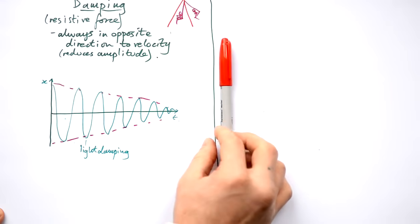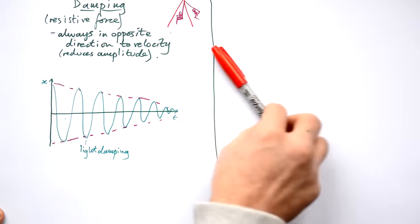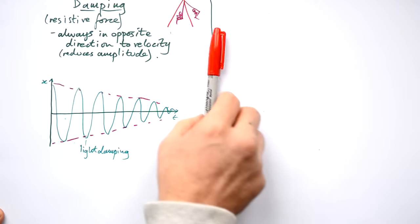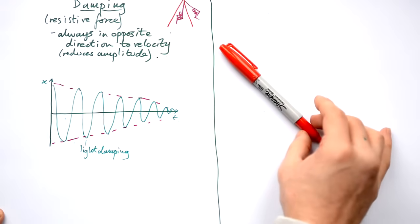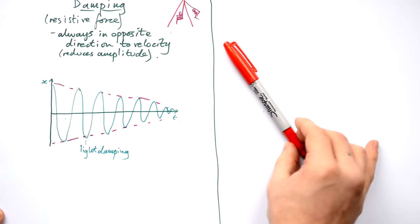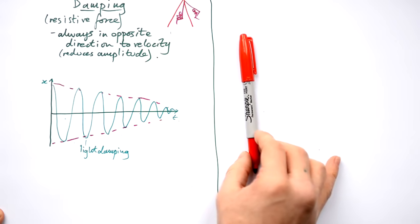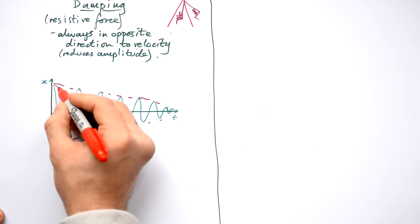But it's time for Seren to go inside and she's swinging away like that and I want to bring her down nice and safely. So she's at the top. What do I do? I grab her at the top and I bring her down nice and slowly like that. What I'm doing there is heavy damping.